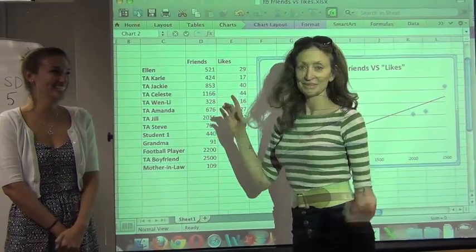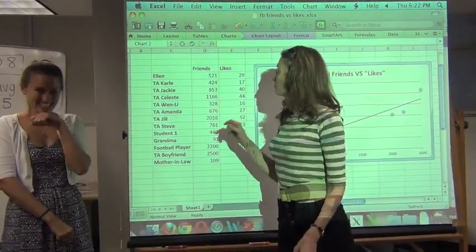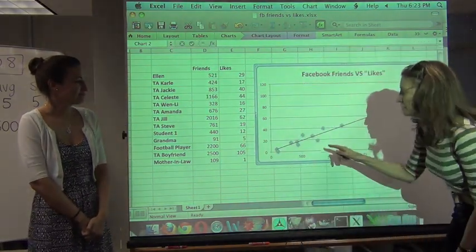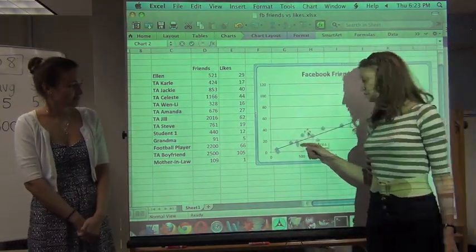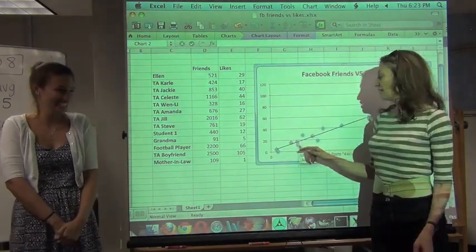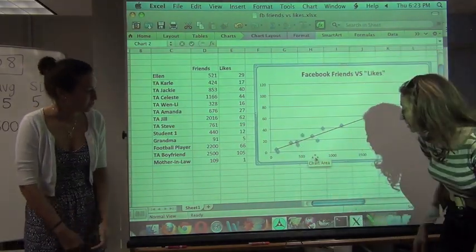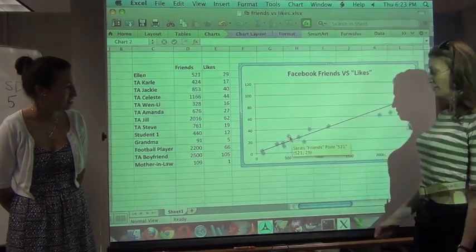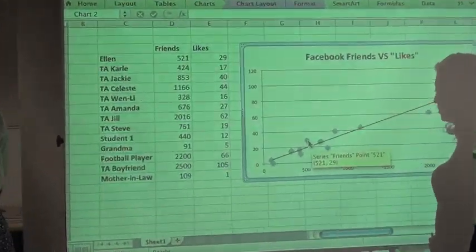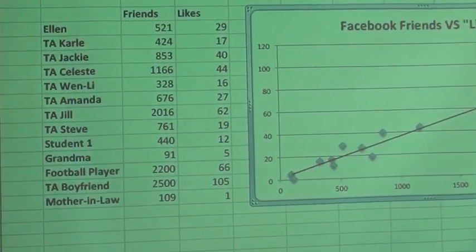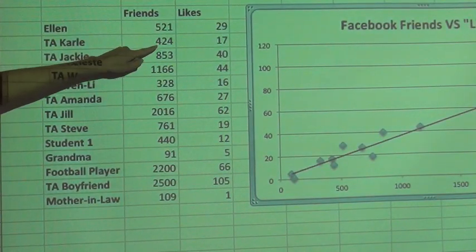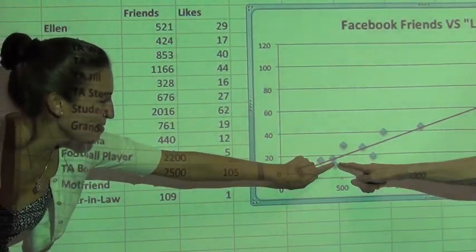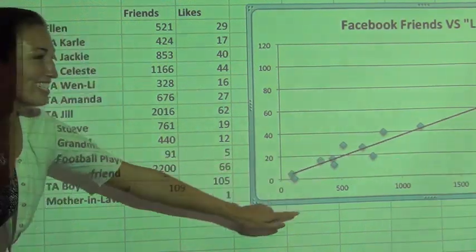So 521, can you see me? 521 is right about, is that me? Yeah, that must be me. Yep, that looks like you. Where are you, Carly? I have 424 friends and 17 likes, so I'm probably right here. Oh, we're pretty close to each other. Yeah, you have more friends than me though.